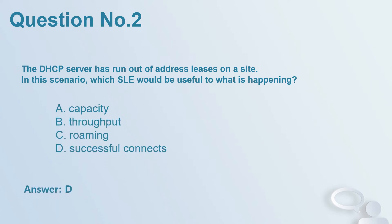Question number 2: The DHCP server has run out of address leases on a site. In this scenario, which SLE would be useful to understand what is happening? A. Capacity. B. Throughput. C. Roaming. D. Successful connects. Answer: D.